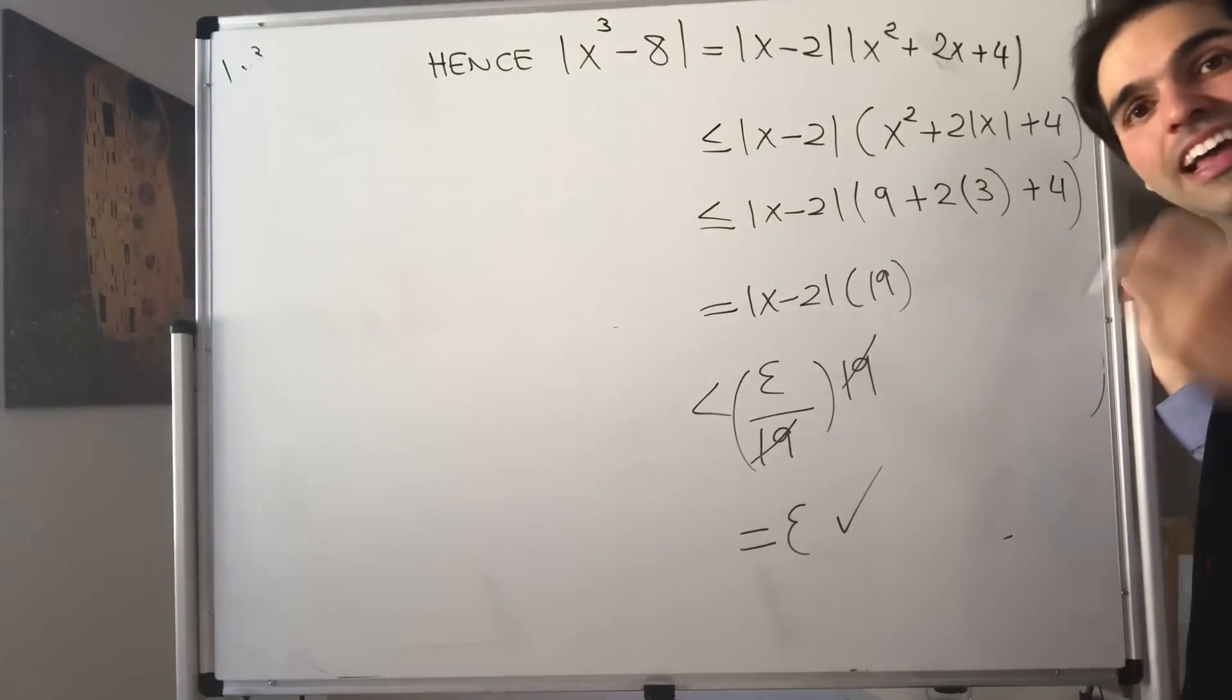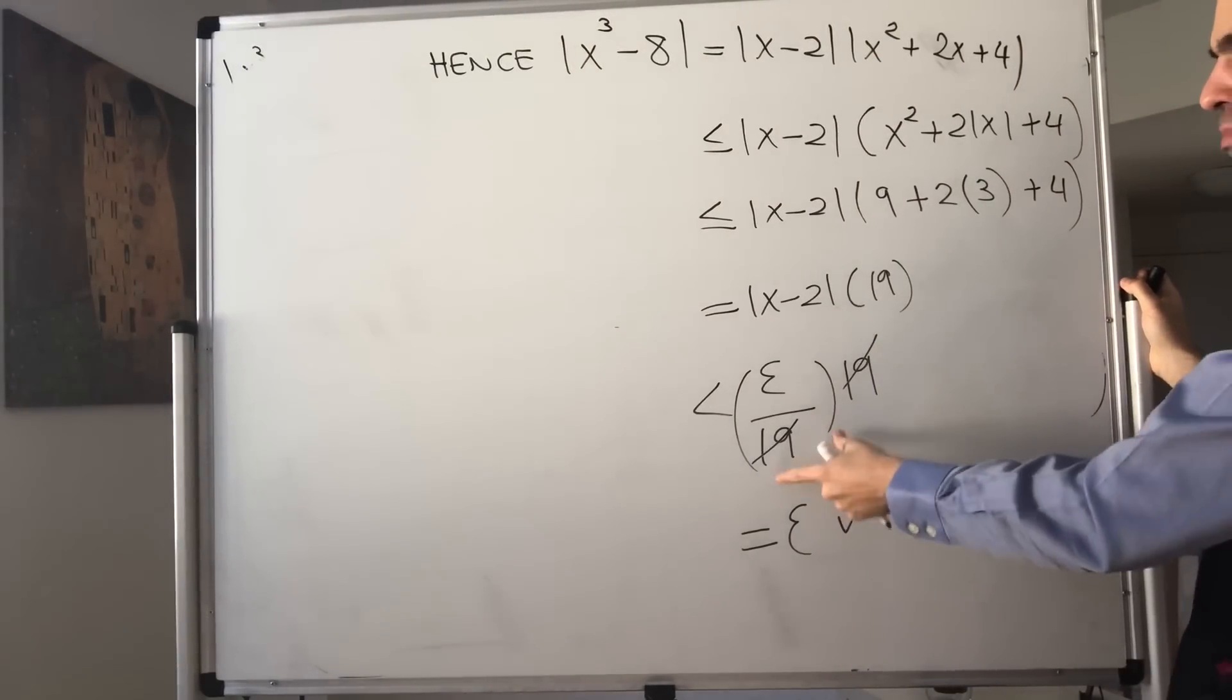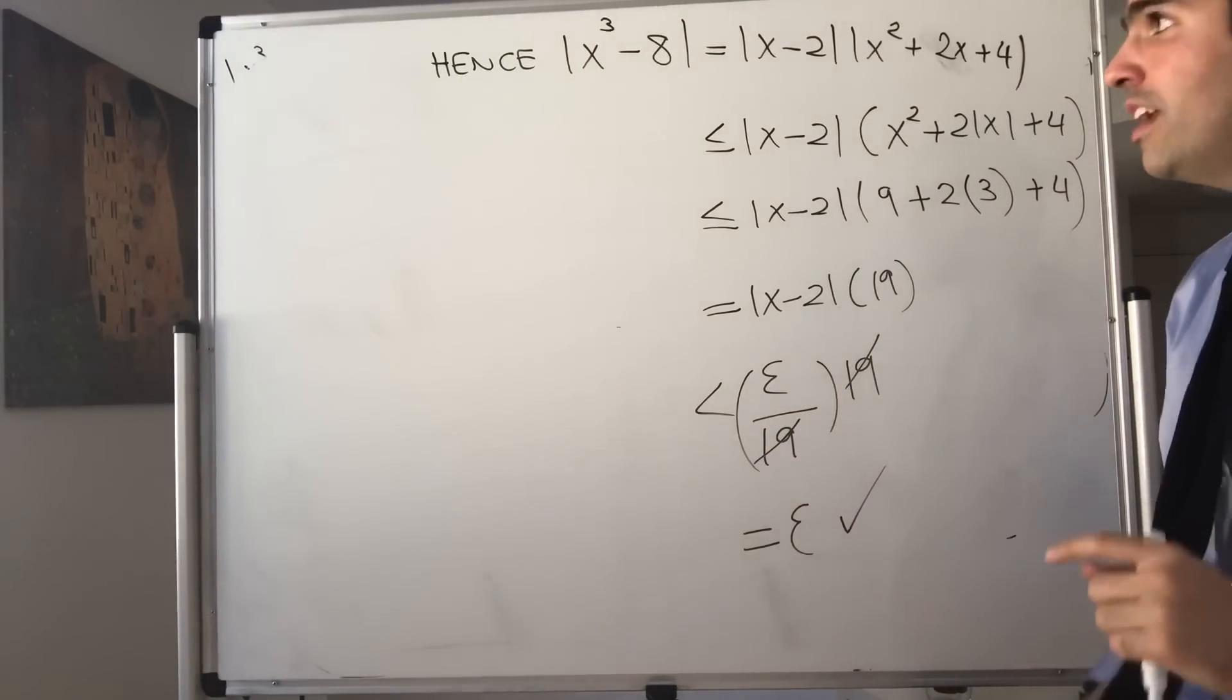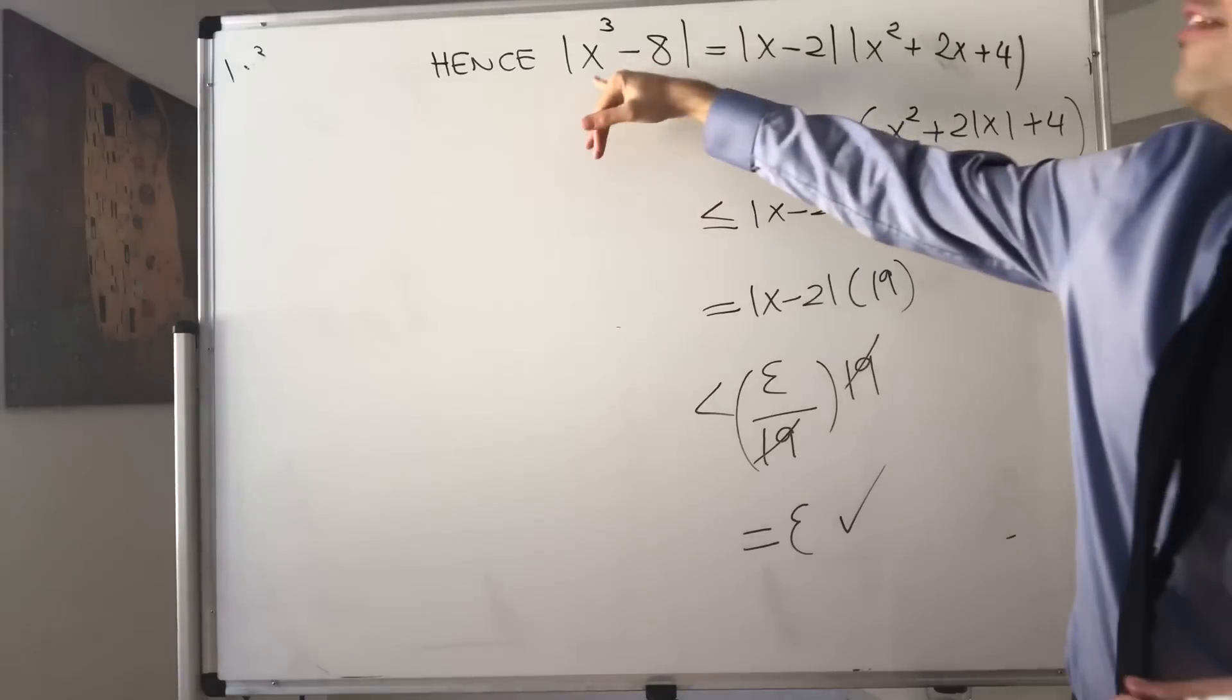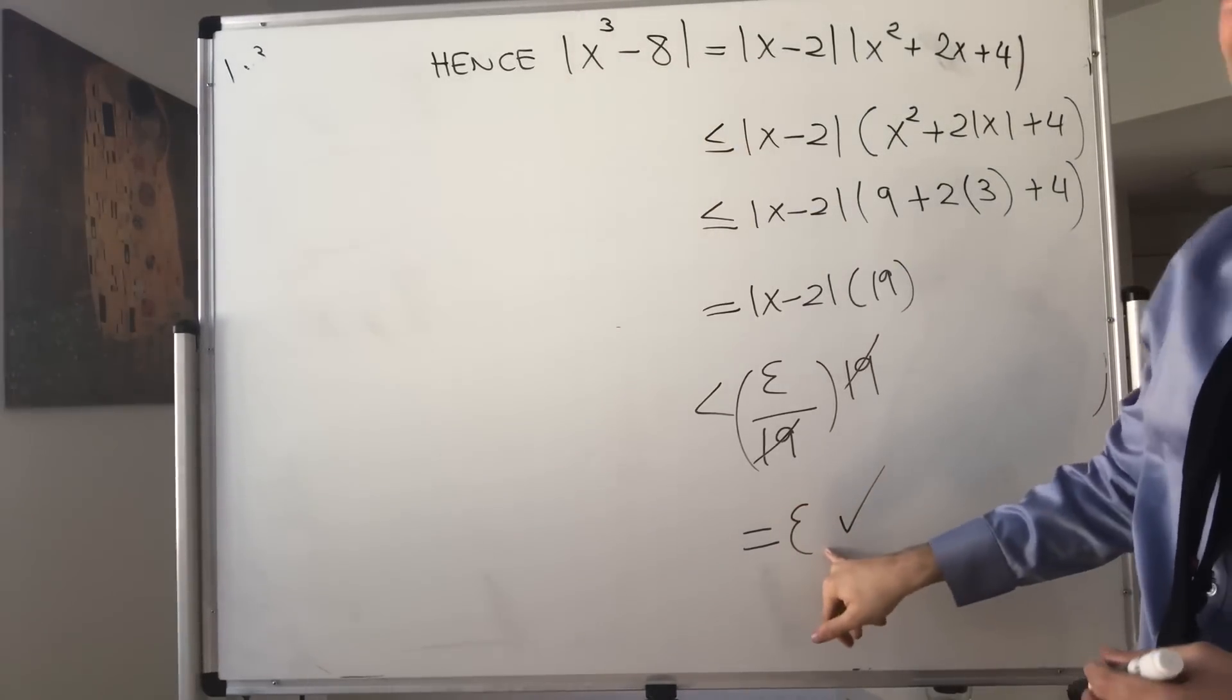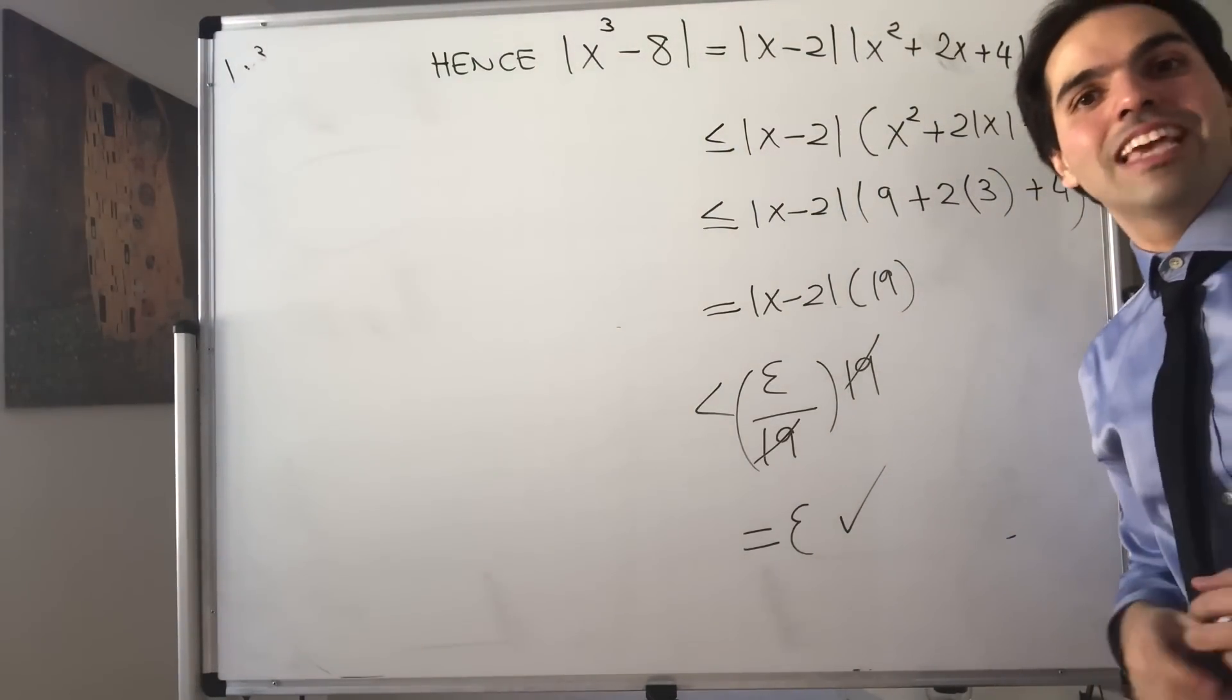Therefore, for all epsilon, if you choose delta to be the minimum of epsilon over 19 and 1, then if x minus 2 is less than delta, we have shown that x cubed minus 8 is less than epsilon. Therefore we're done and we can stay home happy.